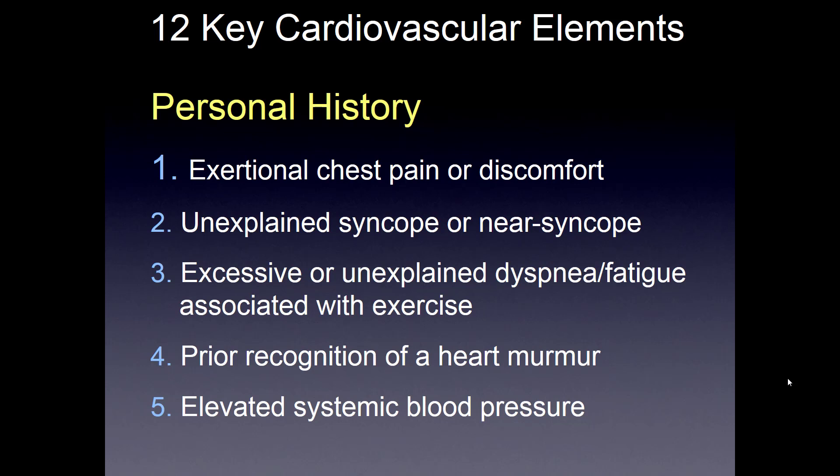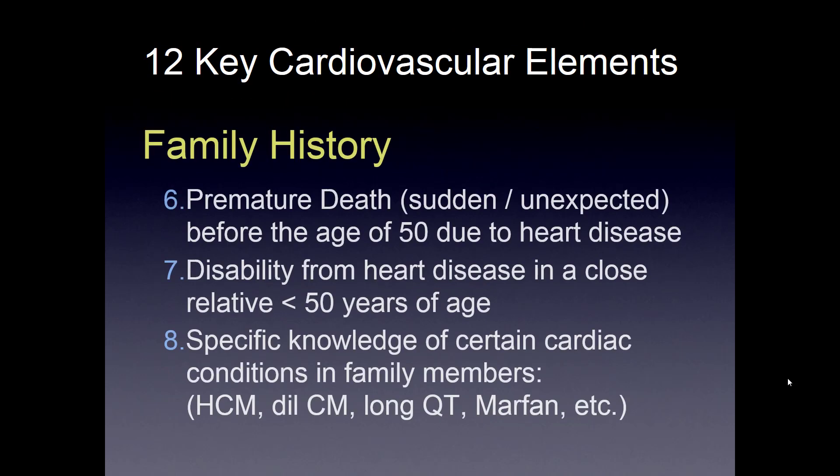Key personal history items include exertional chest pain or discomfort, unexplained syncope or near syncope, excessive or unexplained dyspnea or fatigue associated with exercise, any prior recognition of a murmur, and elevated systemic blood pressure. For family history: any premature death, unexpected death before age 50 due to heart disease, disability from heart disease in a close relative under 50, or specific knowledge of cardiac conditions like hypertrophic cardiomyopathy, dilated vessels, long QT syndrome, or Marfan's syndrome.